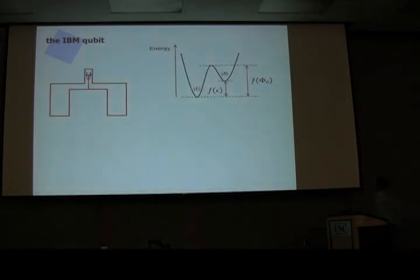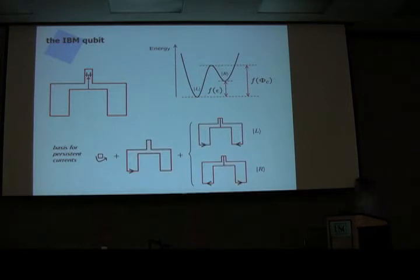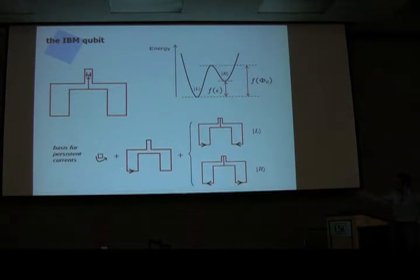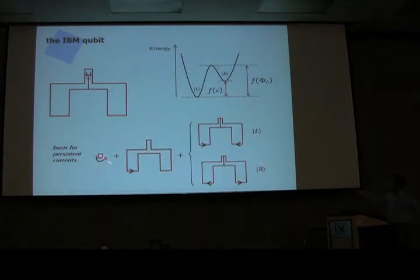To understand the qubit states, here's a cartoon explicitly showing where the Josephson junctions are. The two basic states for these flux qubits are persistent currents in the loops — a left state and a right state. The left state corresponds to a current going around the small loop one way and through the big loops another way. The two computational states differ only in how the currents rotate in the two big loops, and depending on the bias, they may have the same energy or not.